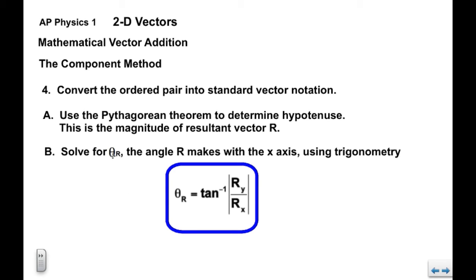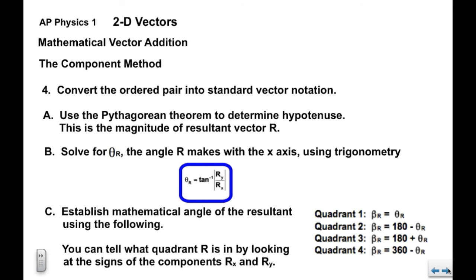Then we're going to solve for theta sub r, the angle that r makes with the x axis using trigonometry. So theta sub r is inverse tangent of the ry over the rx. Notice that these are in absolute value symbols, so we can ignore if ry or rx are negative. And then we establish the mathematical angle of the resulting vector r using the following, based on which quadrant it's in.